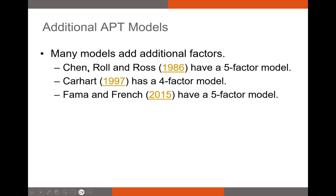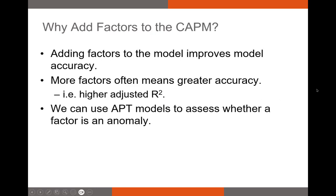There are other famous APT models: an early five-factor model by Chen, Roll, and Ross; the Carhart four-factor model, which is the Fama-French three-factor model with a momentum factor added; and then Fama and French's own five-factor model, which took additional anomalous variables identified by other researchers and added them to their original three-factor model. Essentially, researchers keep identifying anomalies and building new models to incorporate them.